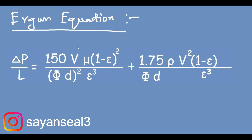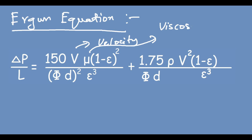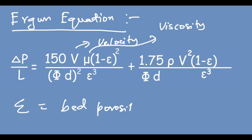I will explain each and every term clearly. This v is the velocity. This μ (mu) is the viscosity. This ε (epsilon) is the bed porosity.